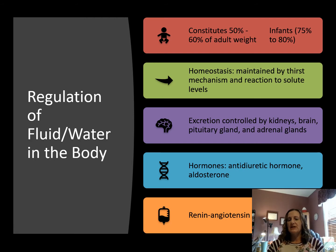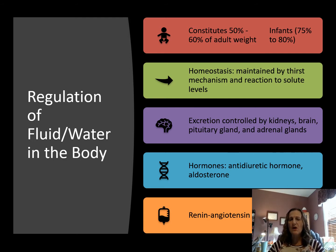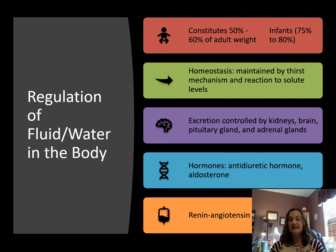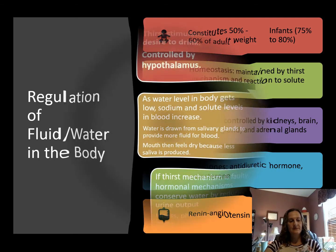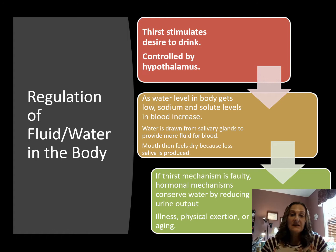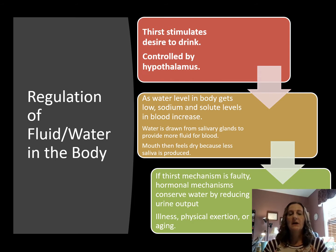Excretion of fluid in the body is regulated by many organs: the kidneys, the brain, the pituitary gland, and the adrenal gland. There's also a hormonal effect with antidiuretic hormone and aldosterone, and the renin-angiotensin system, which helps regulate water balance in the body. It's a complicated regulation involving the hypothalamus and different hormones reacting to water levels.